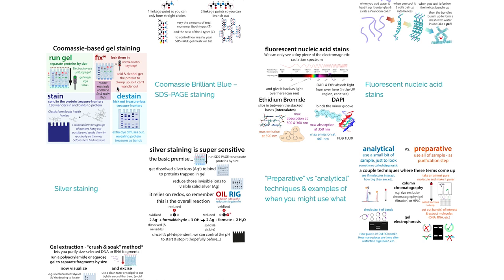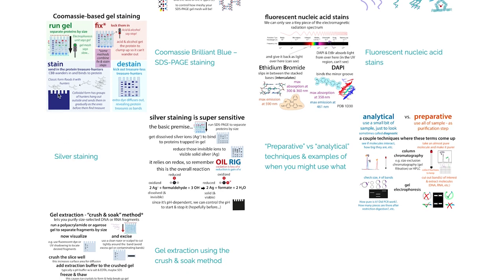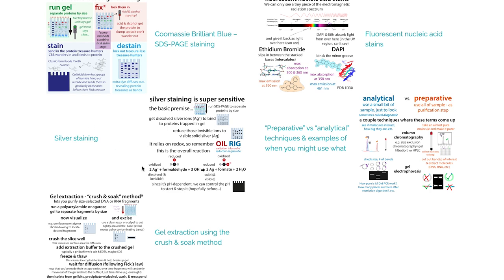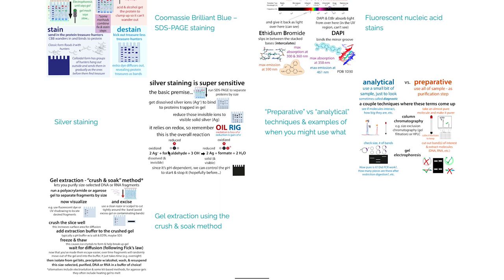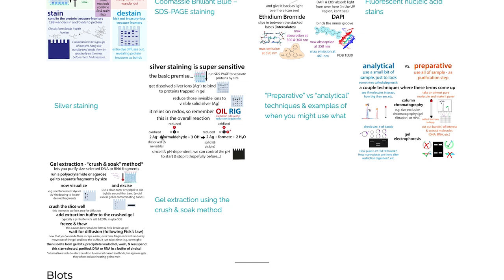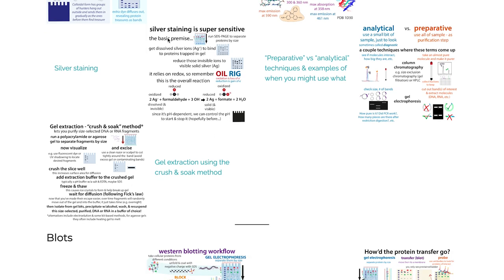With conventional Coomassie blue, you have to fix the gel using acid and alcohol, then stain it — it super-stains the background — and then de-stain it. With the colloidal form, less of it goes into the gel gradually, so you don't get as high a background and can de-stain with water quickly. Colloidal/instant stains are really nice but more expensive. If you need really sensitive detection, silver staining is what you turn to — it makes silver deposits where proteins are located in the gel. It's a pain to run with many steps, easy to over-develop so the whole gel turns black, but it is very, very sensitive — sometimes a little too sensitive.